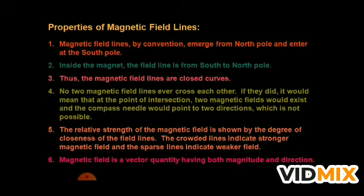So the magnetic field is a vector quantity having both magnitude and direction. In this video we have covered Oersted's experiment, the Right Hand Rule, the Screw Rule, magnetic field lines, and their properties. Revise up to here, solve the questions given in the assignment, and revise from the previous video. If you have any confusion, you can call me or message me in the group. Thank you, have a nice day.